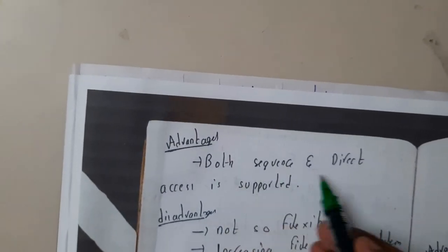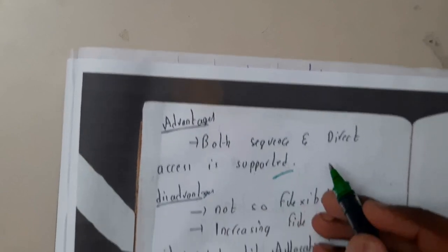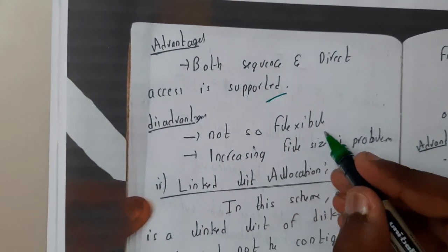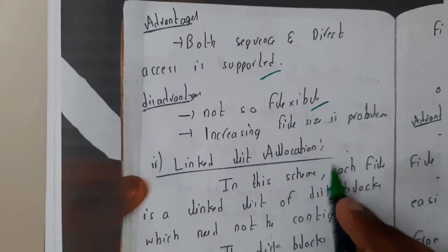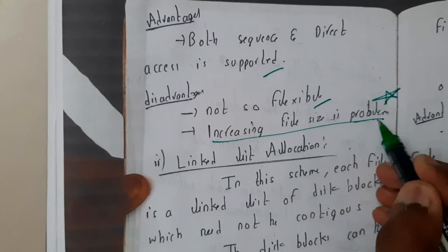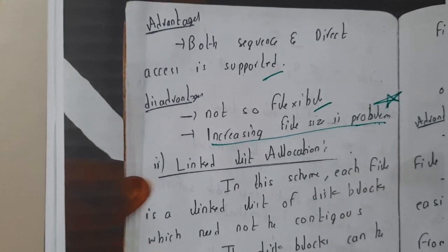The advantages: both sequential and direct access is supported in contiguous allocation. The disadvantage is it is not so much flexible, and increasing the file size will be a huge problem. Please remember this - this is a really important thing in contiguous allocation. I hope everyone got a small idea. In the next tutorial we will be going through linked allocation.